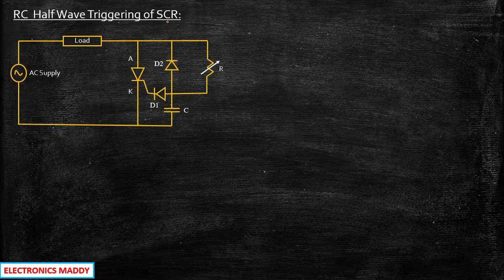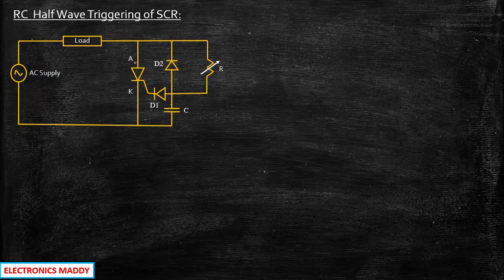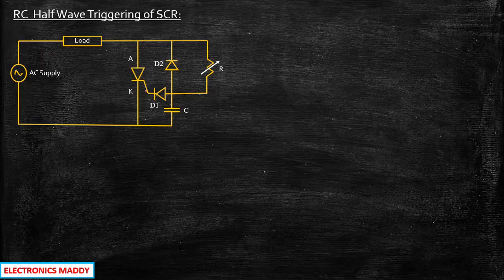What do you understand by RC half wave triggering of SCR? Let's first look at the circuit diagram. It is actually a triggering method for turning on the SCR through the gate terminals. We use resistive and capacitive elements — R and C — to turn on the SCR through the gate terminals, and that is why it is called RC. Half wave is because of a specific purpose that I will be explaining at the end of this video.